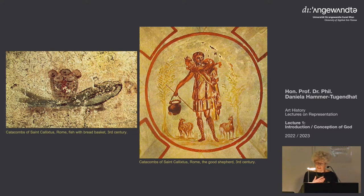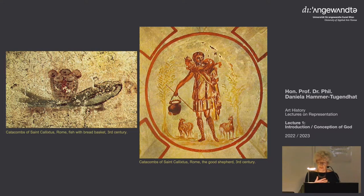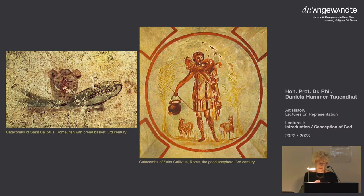Then finally, with Constantine and the legalization of Christianity in the fourth century, sculptural works begin to appear on sarcophagi. This raises a very interesting question: what does this completely new God look like — this God of whom no one is supposed to make a likeness?